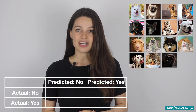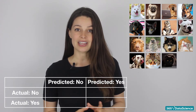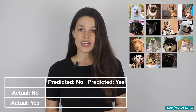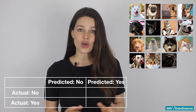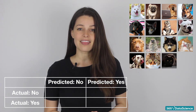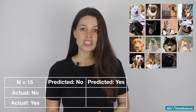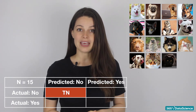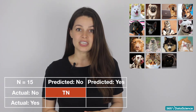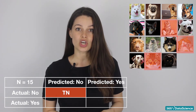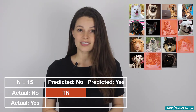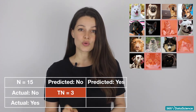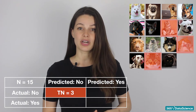In the confusion matrix for the same dog classifier image recognition AI, we take note of the total number of data points — there are 15. Then we start on the top left. Here we count how many images the model predicted were not dogs that were in fact not dogs. Here you count three. These are your true negatives — a correct prediction.